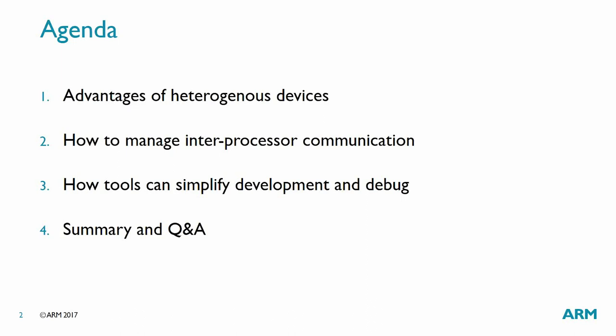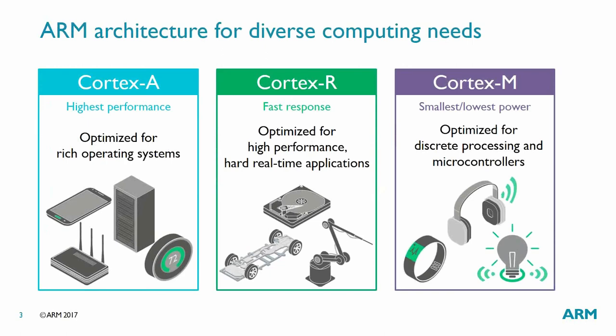The ARM architecture has different profiles based on your needs. The most common is the Cortex-A profile, optimized for high performance, normally running rich operating systems. We find Cortex-A processors in mobile phones, routers, and lately servers. The key characteristic is high performance along with an MMU, which is required for advanced operating systems such as Linux.